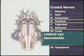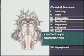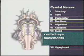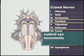Cranial nerves 3, 4, and 6 — the oculomotor, trochlear, and abducens nerves — control eye movements. Because these nerves work together so closely, they're examined as a group.